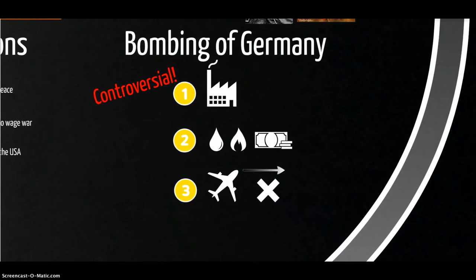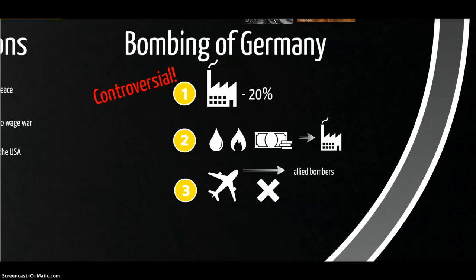The bombing of Germany, as mentioned, was controversial — civilians were part of the targeting package. It did, however, have effects: it reduced the productive capacity of German industry by 20%. Furthermore, it diverted remaining industrial capacity away from producing armaments towards repairing damaged factories. As well, the German Luftwaffe — instead of being able to support the German army effectively — was used to try and deter Allied bombers over the skies of Germany. Luftwaffe fighters were scrambled largely for that purpose and therefore couldn't support German ground forces as they had done very effectively in the earlier Blitzkrieg campaigns of 1939 to 1941.